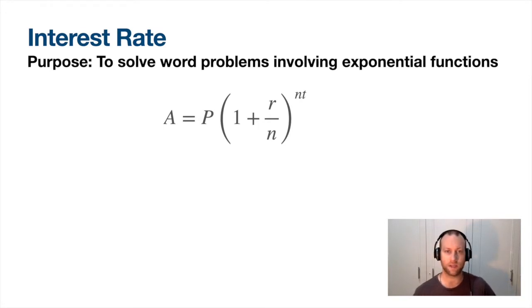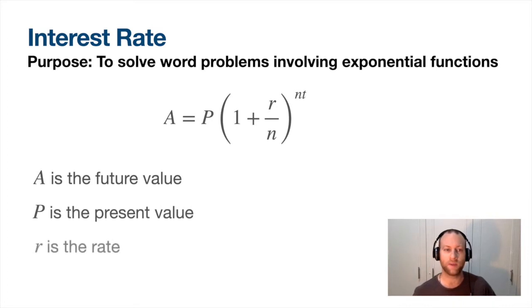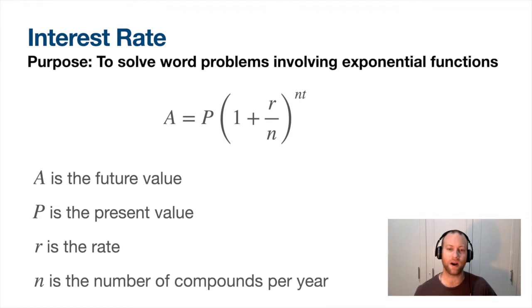Here's my equation for interest rate. A is the future value - this is dealing with money, so what's the future value of money. P is the present value of the money you've got. R is a rate, r is always going to be the rate. N is the number of compounds per year. T is time.